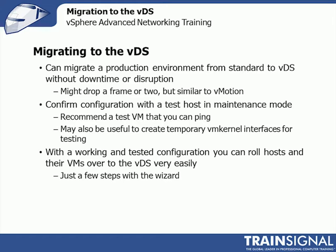If you're working with a tested configuration, you can just roll the host and the VMs very easily. It's just a few steps with the wizard, and you can move 100, 200, 300 VMs very quickly because vCenter gives you an easy-to-use wizard. You basically say, look for all VMs that are currently on this port group and move them to that port group. As long as the VMs have access to the destination port group, the wizard will do the rest.